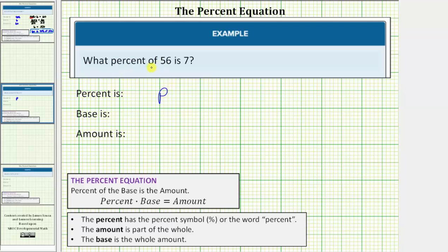Because the question is, what percent of 56 is 7? This means 7 is some percent of 56, and therefore 56 is the whole amount, or the base, and 7 is part of the whole, or the amount.